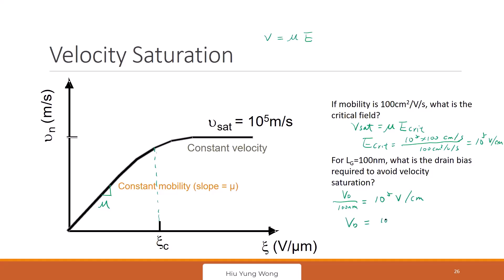If you do some math, 100 nanometer, I told you last time, is 10 to the power of minus 9 meter, which is 10 to the power of minus 7 centimeter, times 10 to the power of 5 volt per cm. What is this? One volt. So when you reach 100 nanometer, you go into velocity saturation regime already.